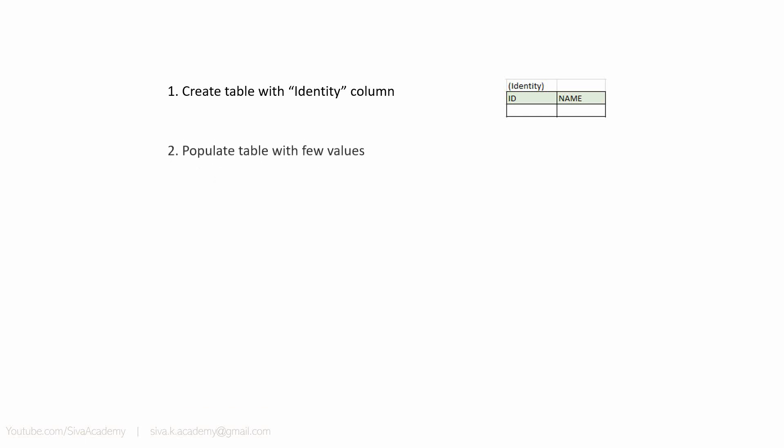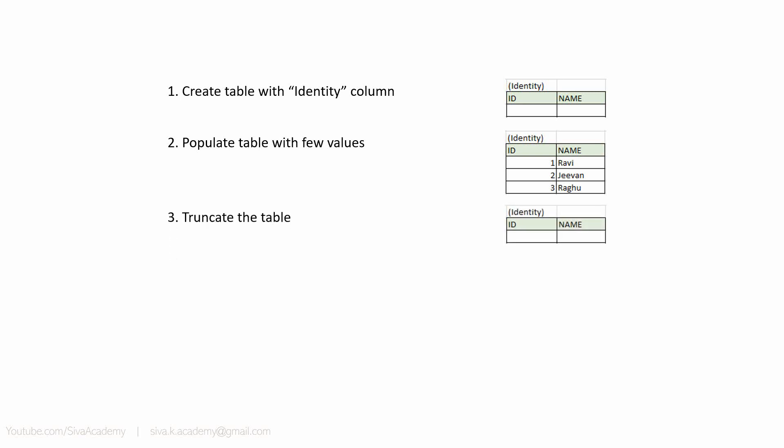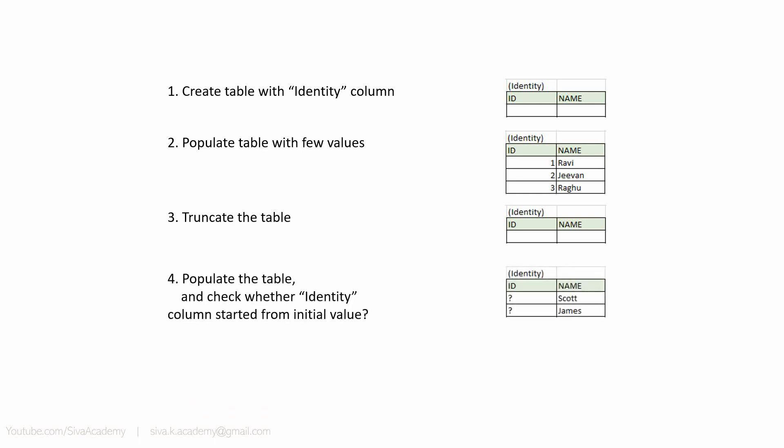We are going to see a simple and straightforward scenario in two different databases. First, we are going to create a table with two columns — a column called ID, which is an identity column, and a name column. Then we are going to populate a few values into the name column. Since ID is an identity column, the database will automatically provide the sequence value. Then we are going to truncate this table, which will remove the content. After that, we will populate a few more values into the table. The question is: will the identity column start from the very last value, or will it restart from the very first value?